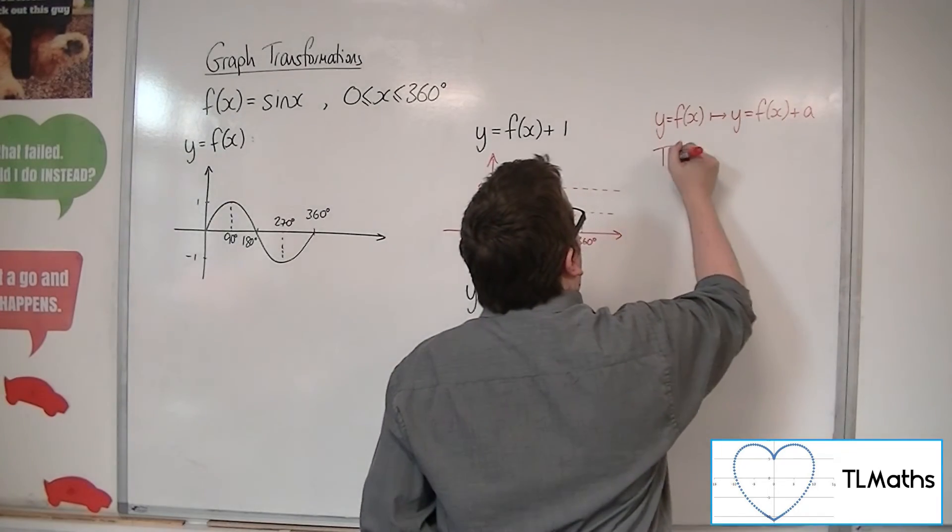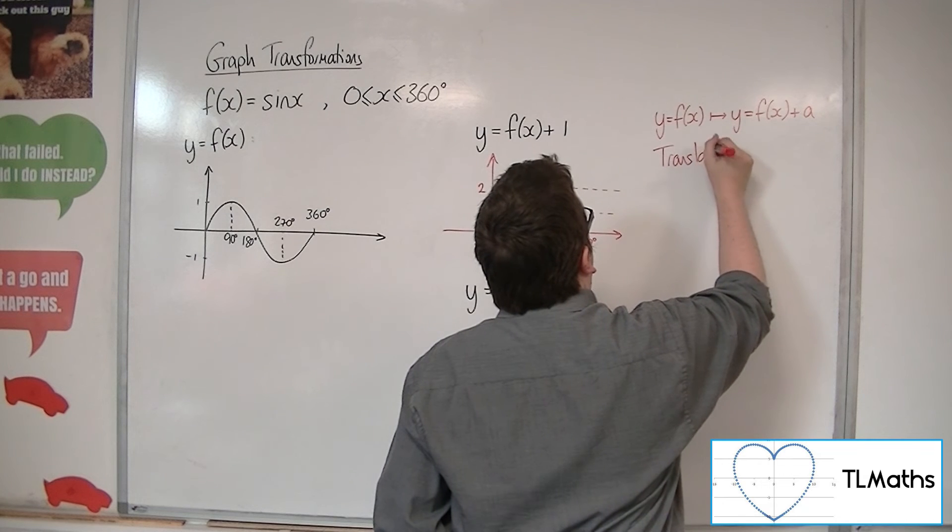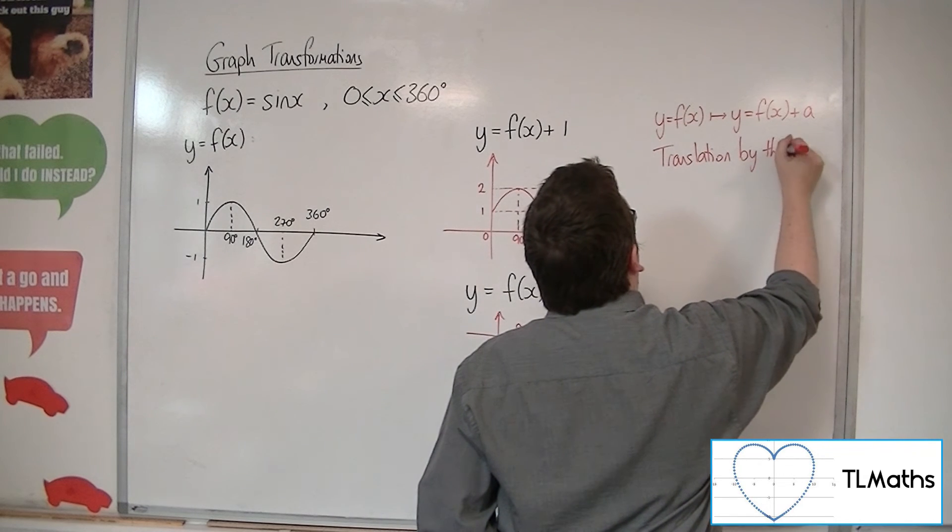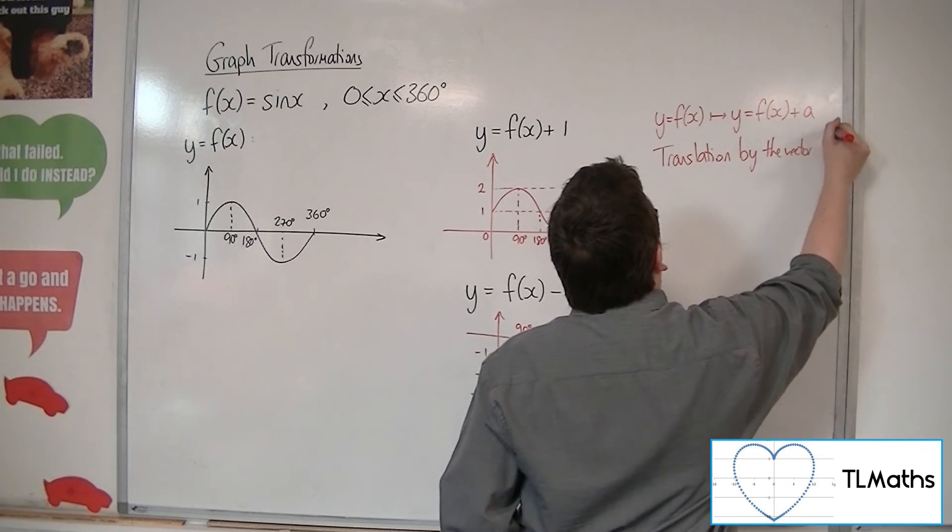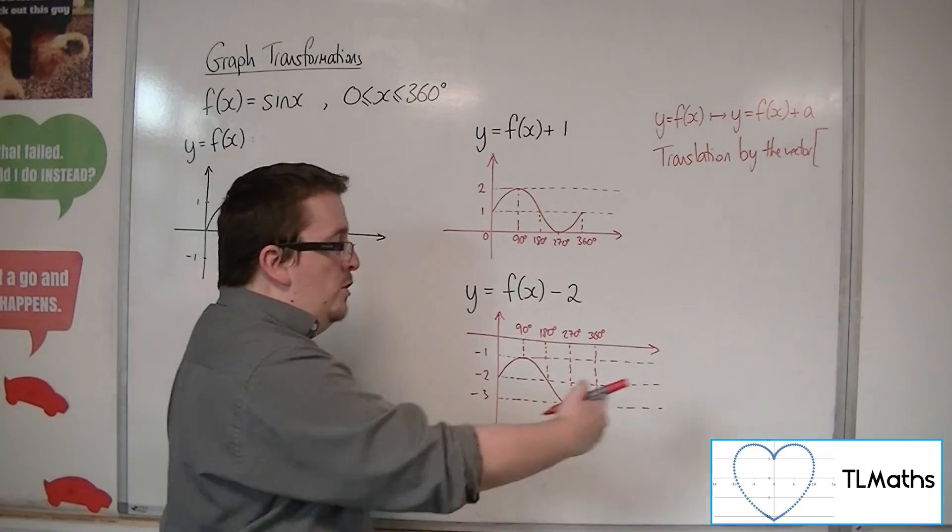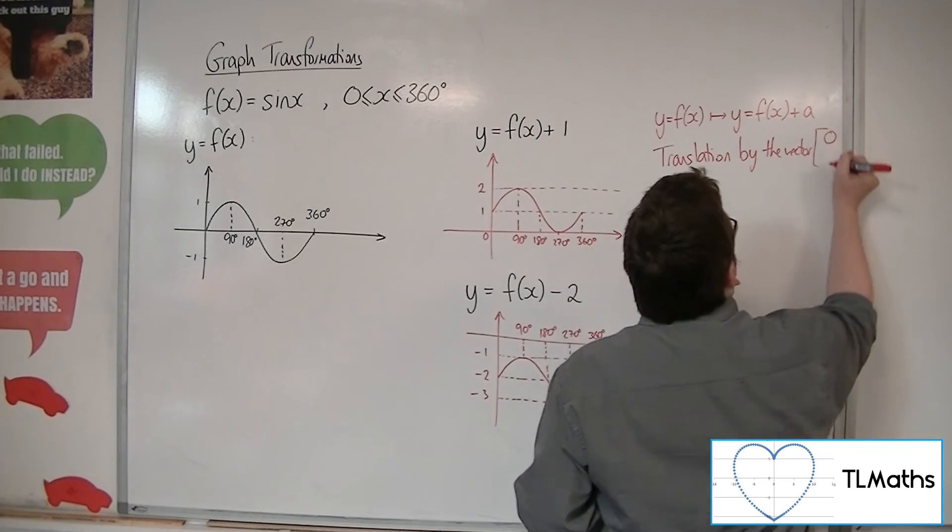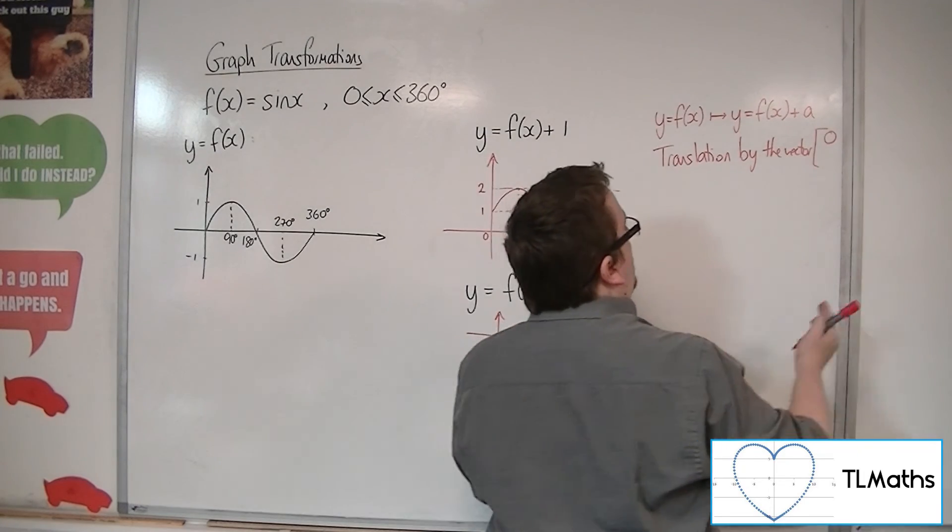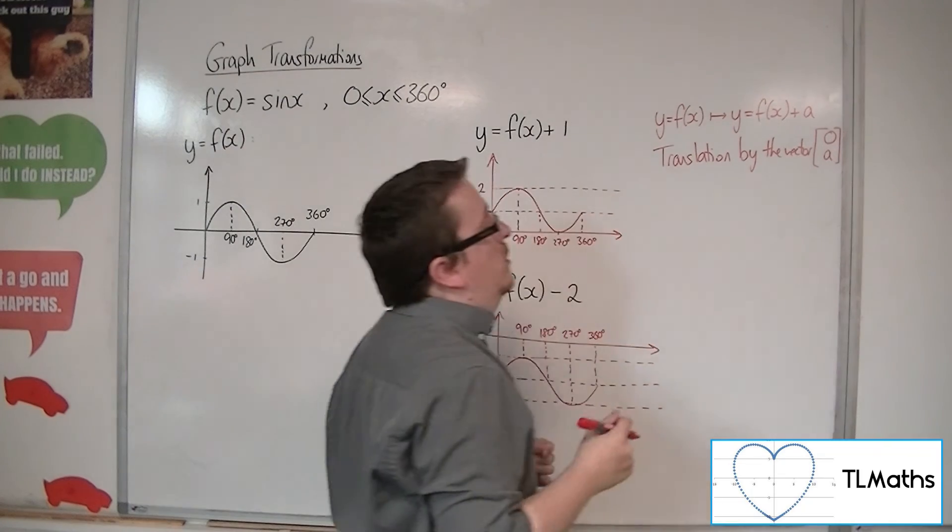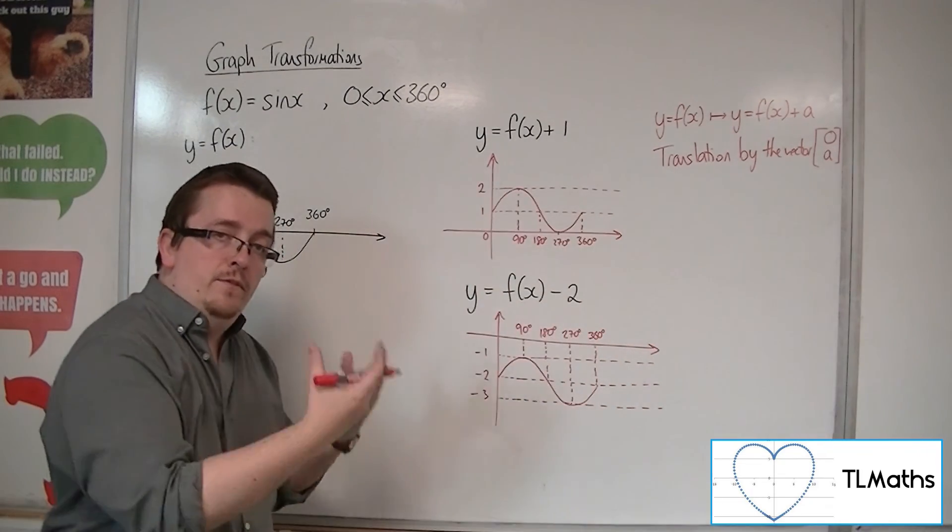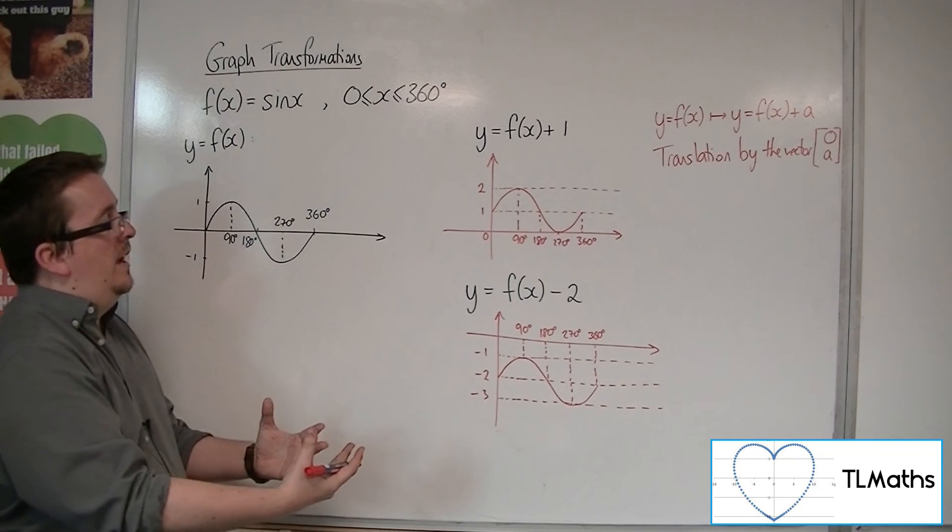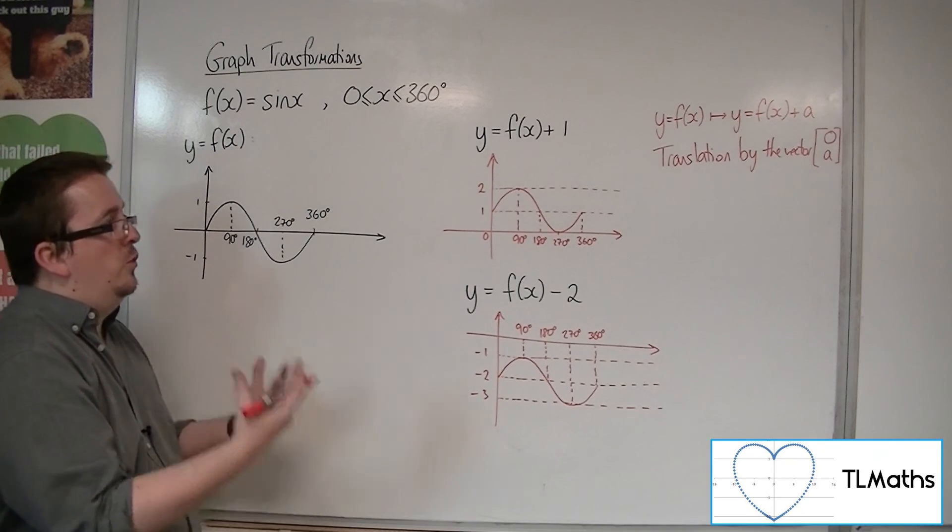So this is a translation. And we describe a translation using a vector. Now, in this case, it's just moving up and down, so it's not moving from side to side. So the side to side motion is zero, but it is moving up a, or if a was negative, down. And that's our first type of transformation that we've investigated.